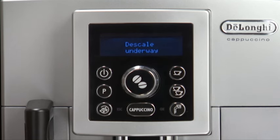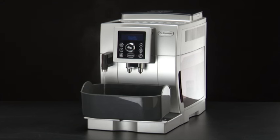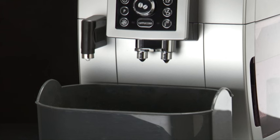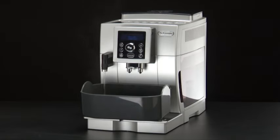The message Descale underway is displayed. The Descale program starts and the descaler liquid comes out of the water spout. The Descale program automatically performs a series of rinses and pauses to remove limescale deposits from inside the machine. Hot water containing acid flows out of the hot water spout. Avoid contact with splashes of water.